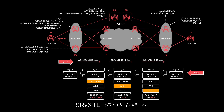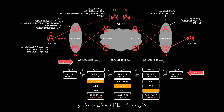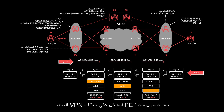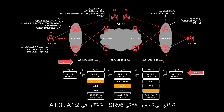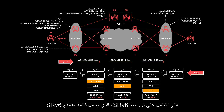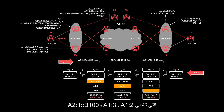Next, let's see how SRv6 TE is implemented. In this example, although VPN is also configured on the ingress and egress PEs, there are specific requirements for the forwarding path. Assume that a packet needs to traverse two specified nodes: A1::2 and A1::3. As the ingress PE obtains the specified VPN ID, it needs to include SRv6 nodes A1::2 and A1::3 in the SRv6 path. To achieve this, the ingress PE encapsulates the packet with an SRv6 header, which carries a segment list covering A1::2, A1::3, and A2::1::B100.